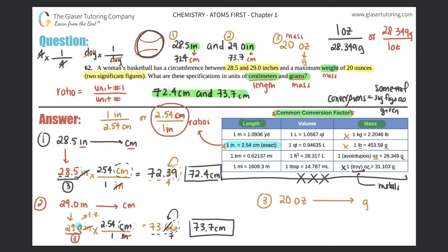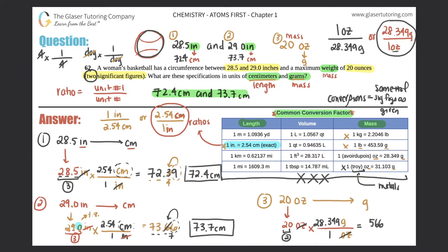Start with what you're given: 20 ounces. Multiply by a ratio — I don't want ounces, so that goes on the bottom and grams go on top. That means I use 28.349 grams over one ounce. The ounces cancel. The problem tells us 20 has two significant figures, so I'll treat it as two sig figs. 20 times 28.349 gives 566.98.